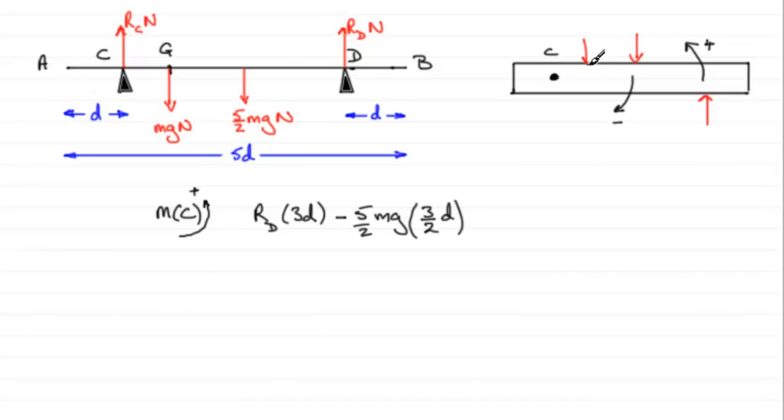Next let's have a look at the weight of the rod, mg. Again we can simulate that by pushing down on the ruler here and again that's going to want to turn it in that sense, in the negative sense about C. So it's going to be minus the force mg multiplied by the distance from G to C.